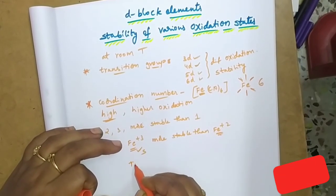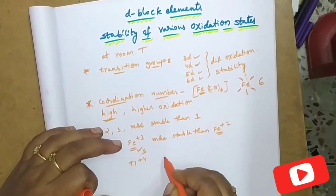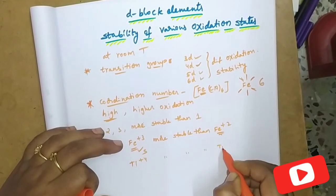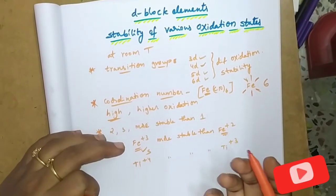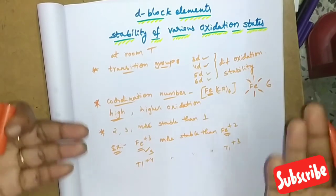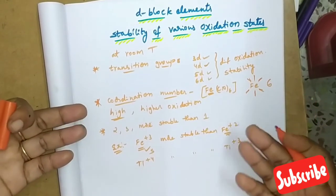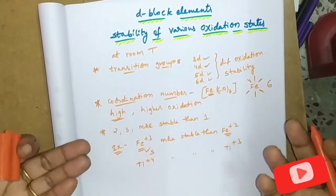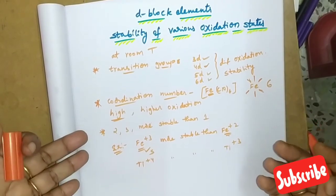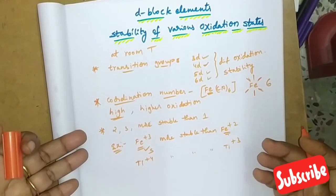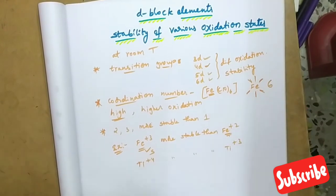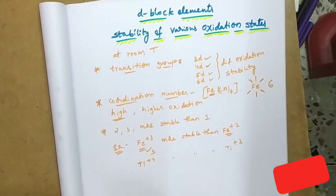Another example: Titanium plus 4 is more stable than titanium plus 3. When oxidation state increases, stability nature also increases. This is also because coordination number increases and the ability to form coordinate bonds increases. This is about the stability of various oxidation states. Thank you.